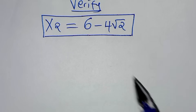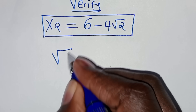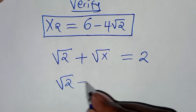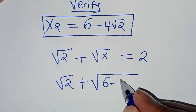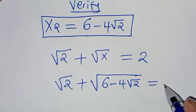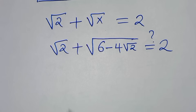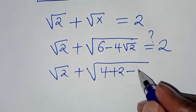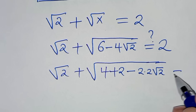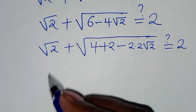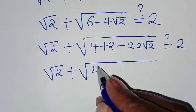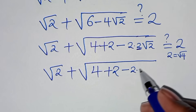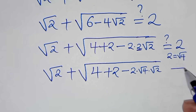So let's verify that x2 satisfies the equation. We have square root of 2 plus square root of x supposed to give 2. Substituting x2 equals 6 minus 4 square root of 2: we have square root of 2 plus square root of 6 minus 4 square root of 2. We can express 6 as 4 plus 2, and 4 square root of 2 as 2 times 2 times square root of 2, so inside we have 4 plus 2 minus 2 times square root of 4 times square root of 2. This should give a value of 2.